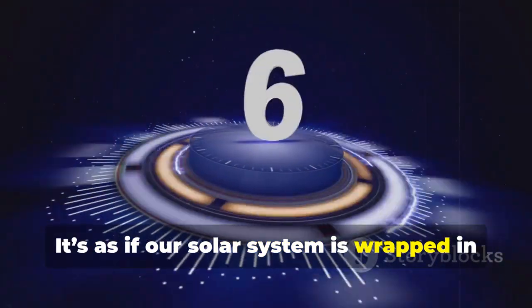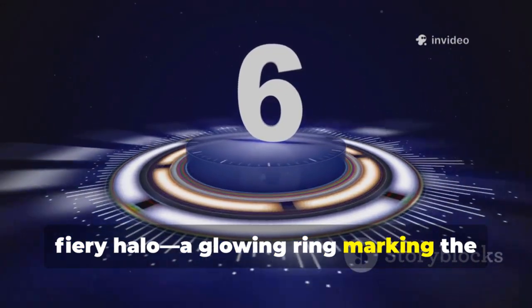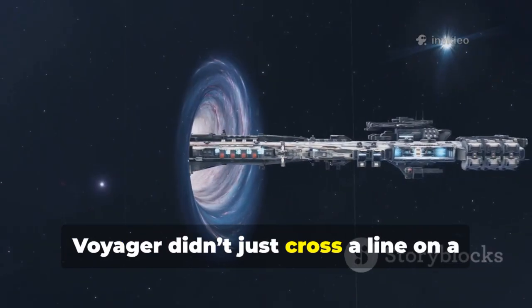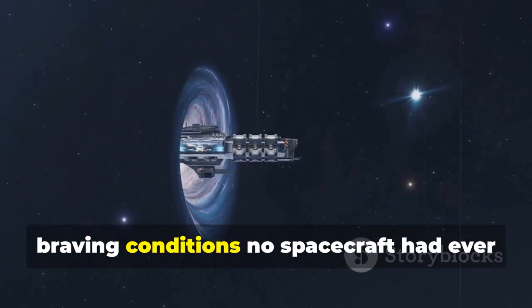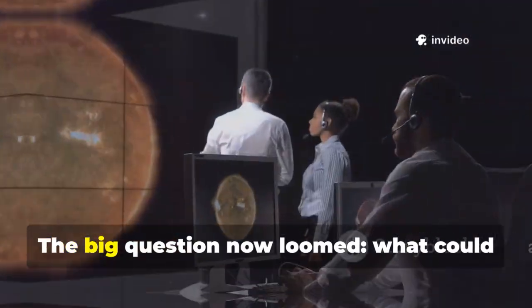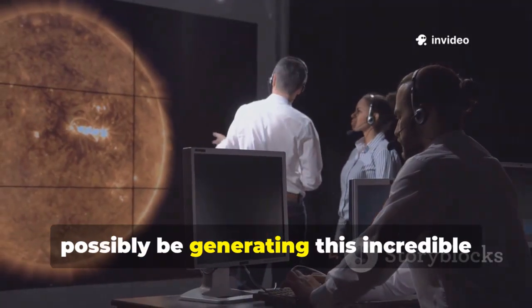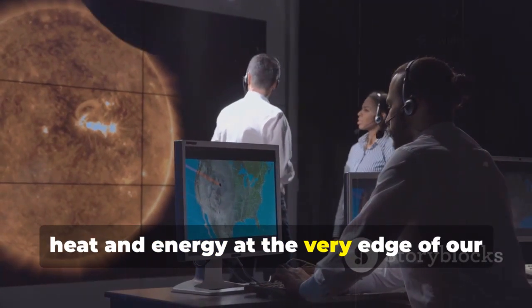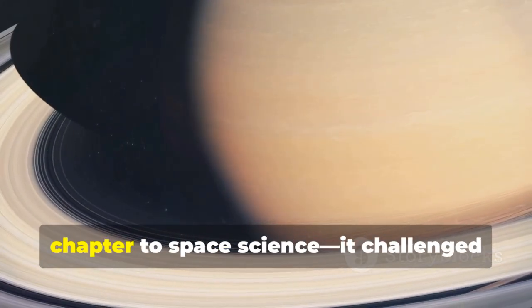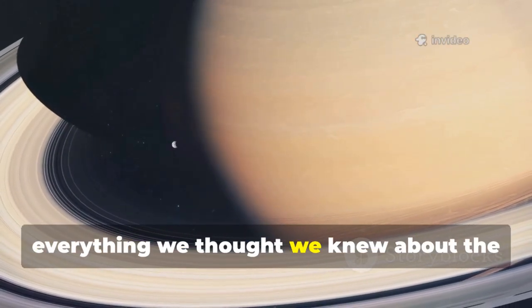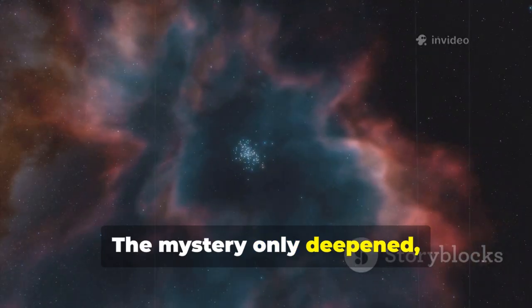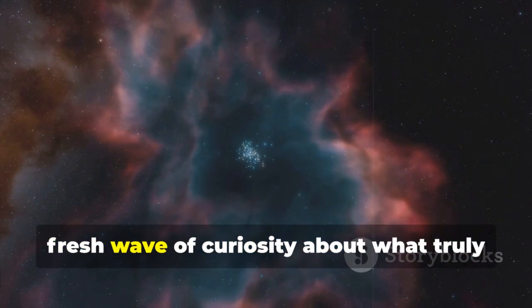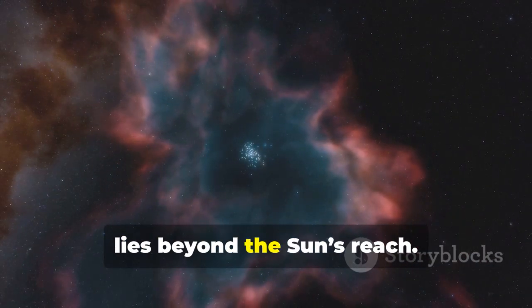It's as if our solar system is wrapped in an invisible, fiery halo, a glowing ring marking the boundary between our sun's domain and the vast unknown of interstellar space. Voyager didn't just cross a line on a map, it plunged into a cosmic cauldron, braving conditions no spacecraft had ever encountered before. The big question now loomed: what could possibly be generating this incredible heat and energy at the very edge of our solar system? This discovery didn't just add a new chapter to space science, it challenged everything we thought we knew about the boundaries of our solar system, forcing a paradigm shift in our understanding. The mystery only deepened, demanding new explanations and igniting a fresh wave of curiosity about what truly lies beyond the sun's reach.